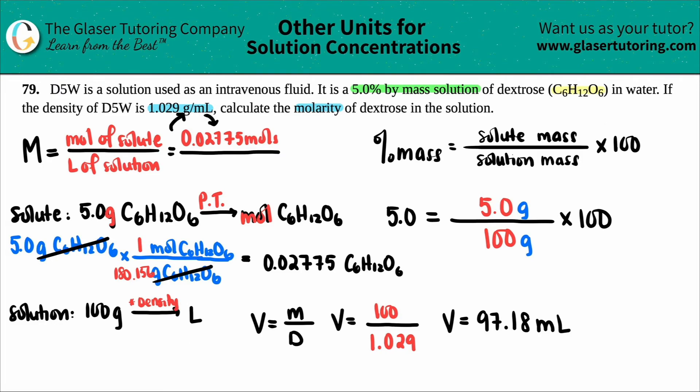But we can do a quick conversion to go from milliliters to liters. How do we do that? Yeah, we just divide by 1000. So take the 97.18 and divide by 1000. My new volume for the whole solution is 0.09718. And now that's in liters. That's the number that goes on the bottom here. 0.09718 liters.